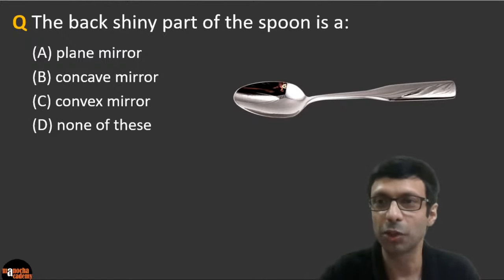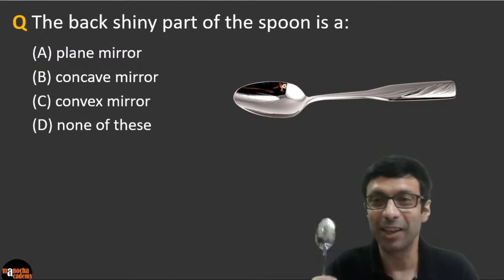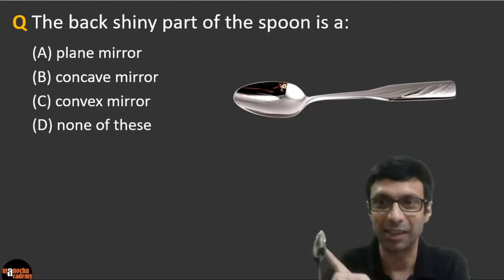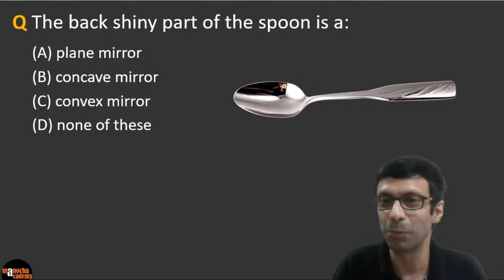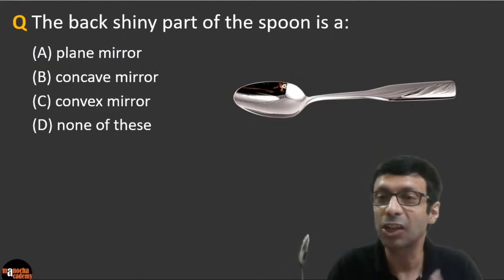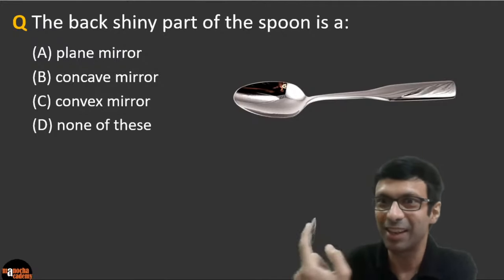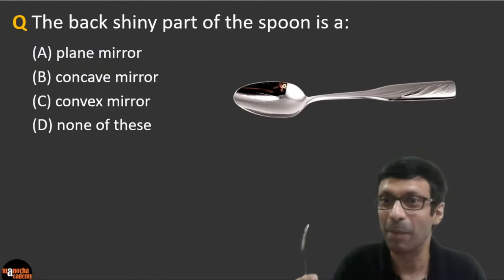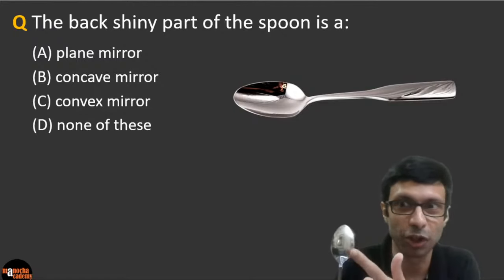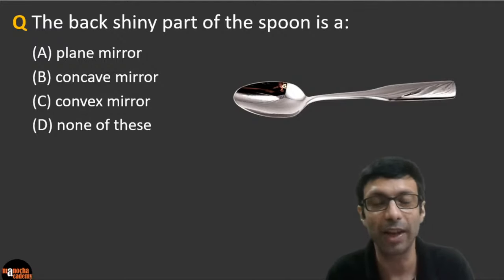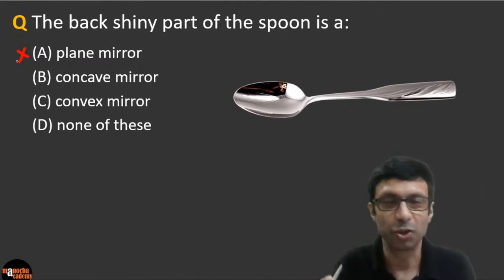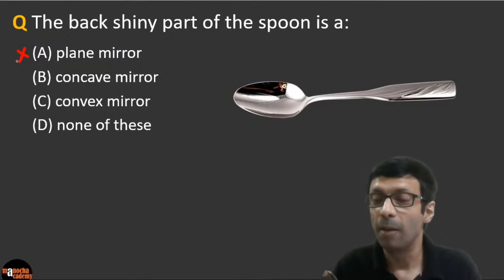Next time you're eating lunch or dinner, pick up your spoon and check. The spoon has a curved surface, and a shiny spoon is a reflecting surface. It has a curved surface on the front and the back side. This question is asking about the back shiny part of the spoon. The answer cannot be plane, because we are talking about a curved mirror — the spoon is curved in shape.